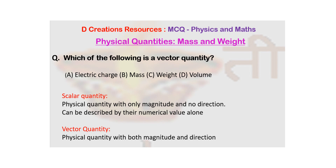For those who don't know about it, let's understand what a vector quantity is. Physical quantities can be classified as scalar quantities or vector quantities. All those physical quantities which can be described only by magnitude or numerical value are scalar quantities — you don't need direction to describe them. All physical quantities which require both magnitude and direction for specification are vector quantities. For example, distance is a scalar quantity while displacement is a vector quantity.